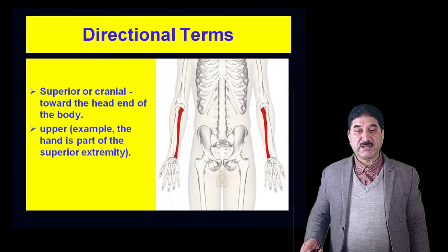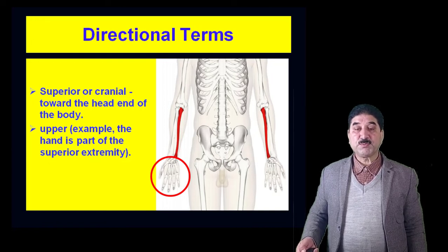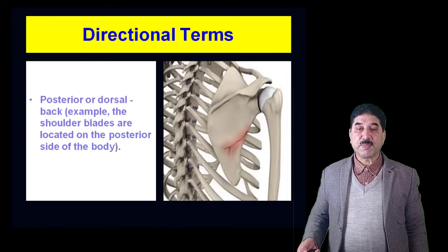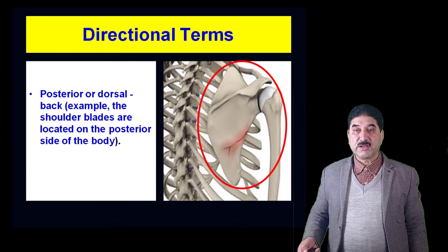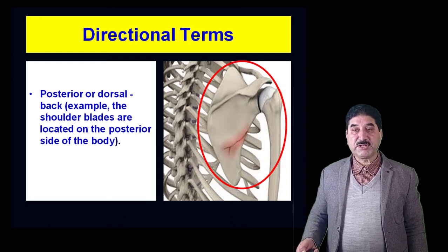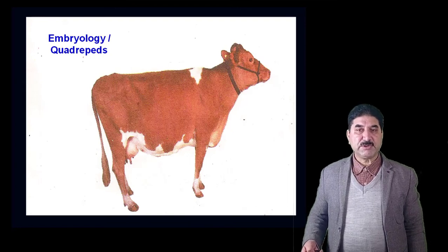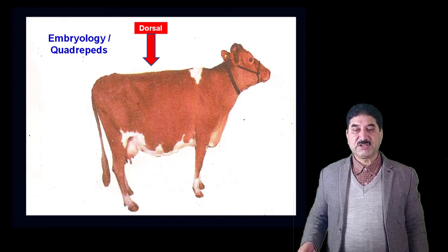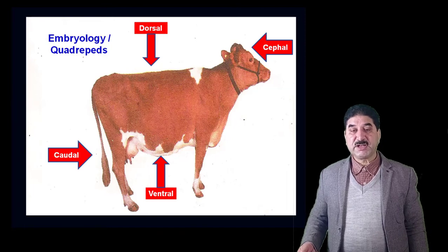For example, the hand is part of the superior extremity (upper limb) and the foot is part of the inferior extremity (lower limb). Posterior is also called dorsal — for example, the shoulder blades are located on the posterior side of the body, and the pectoralis major muscle is located on the anterior side. In embryology and quadrupeds, different terminology is used: dorsal is used instead of posterior, ventral instead of anterior, cranial or cephalic instead of superior, and caudal instead of inferior.